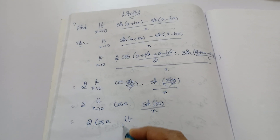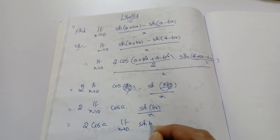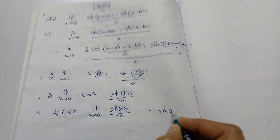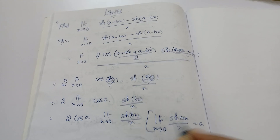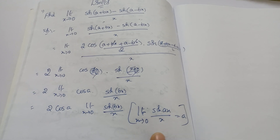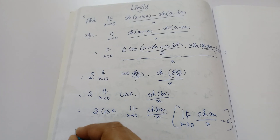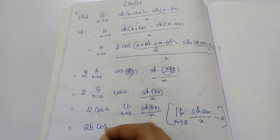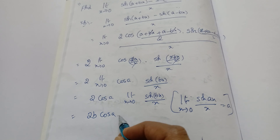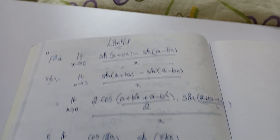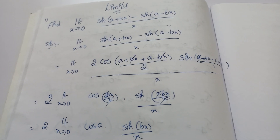We have cos(a) outside, and limit x tends to 0 of sin(bx)/x. Remember the formula: lim(x→0) sin(ax)/x = a. So here sin(bx)/x gives b. Therefore the answer is 2b·cos(a). Don't write it as cos(ab) — b is a separate term. Write it as 2b·cos(a) with b before the bracket or outside. That is our answer.